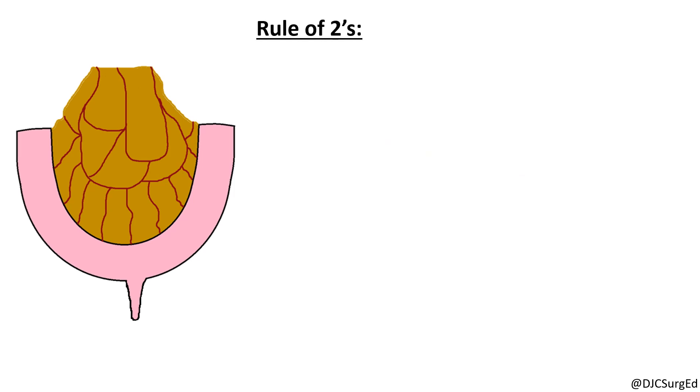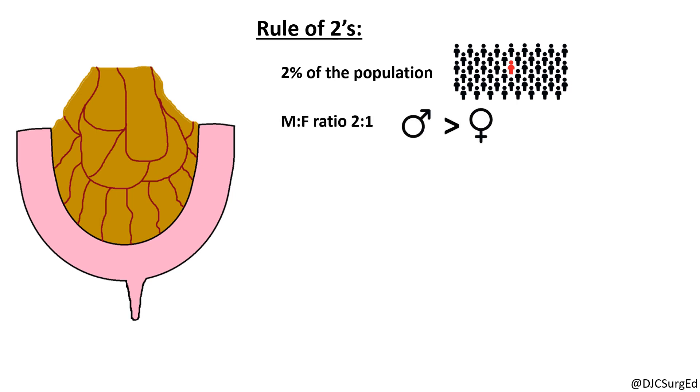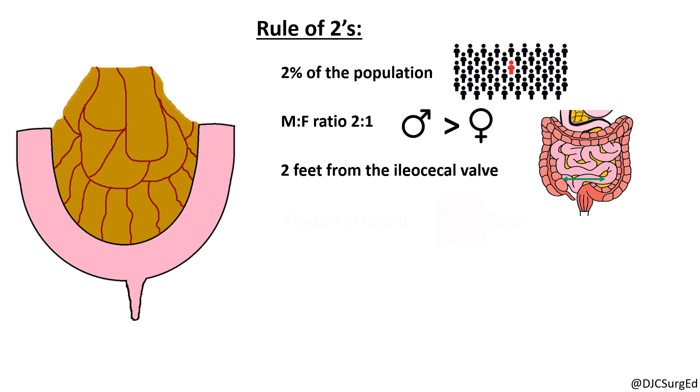The rule of 2's is the classic description of the features of a Meckel's diverticulum. It states that a Meckel's occurs in approximately 2% of the population with a male-to-female ratio of 2 to 1, is located within 2 feet of the ileocecal valve, and can be 2 inches in length.